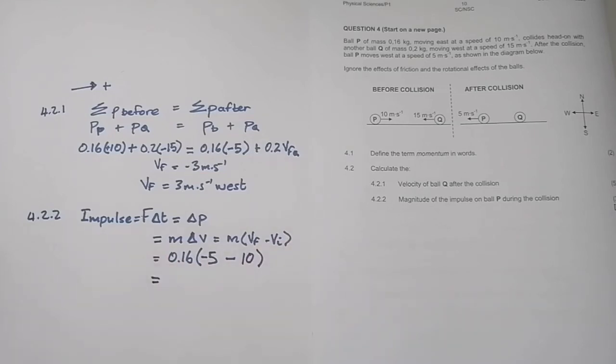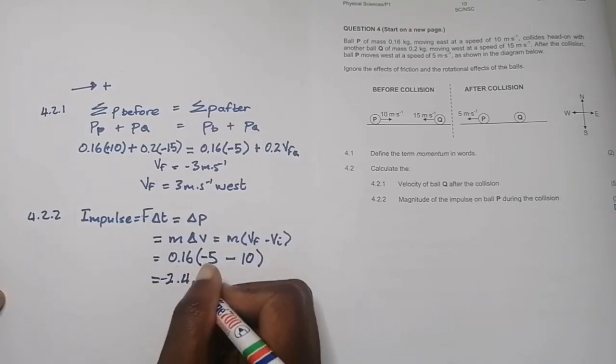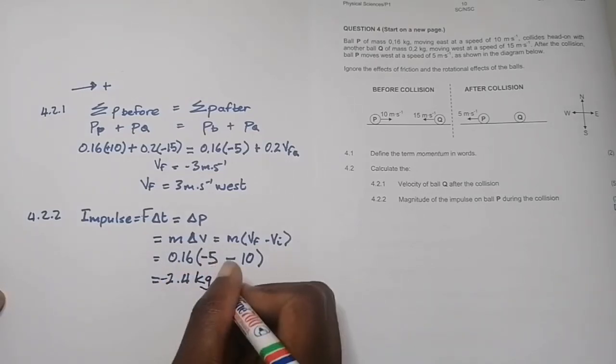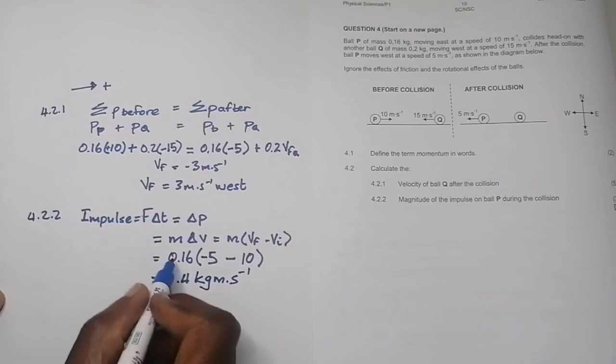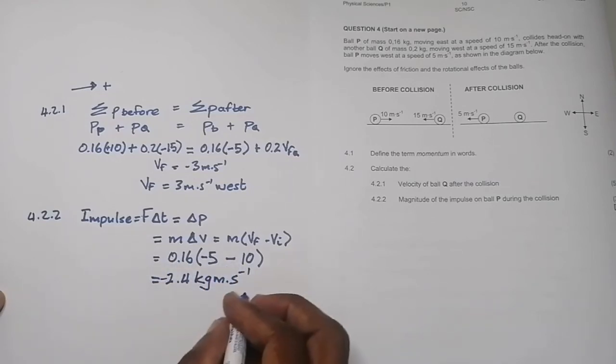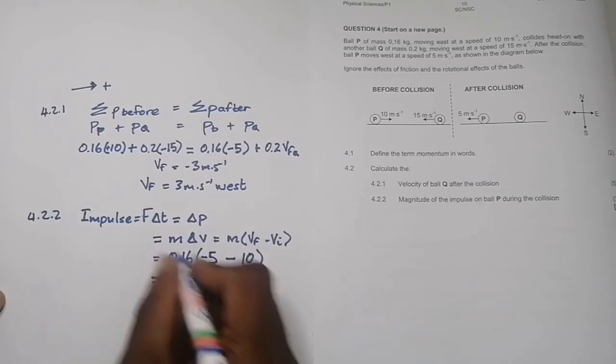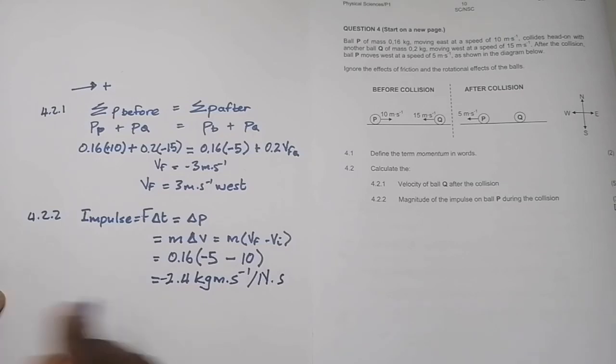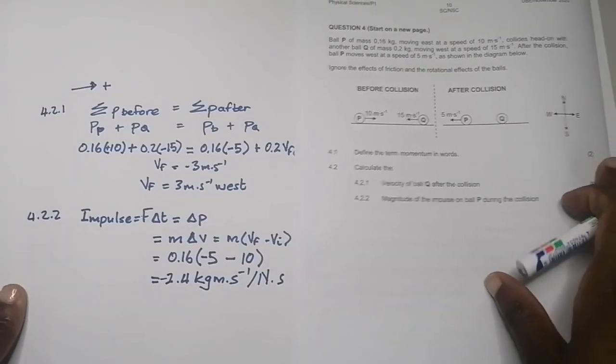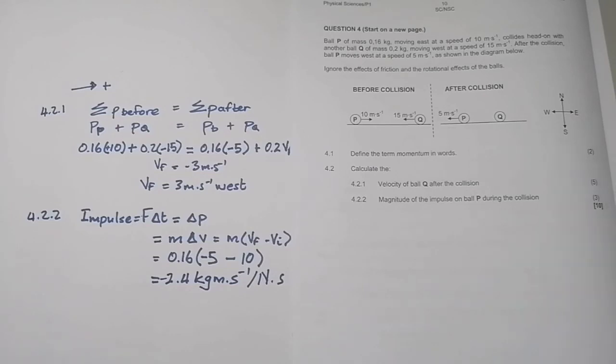The final answer is negative 2.4 kilogram meters per second. Keep in mind that's mass times velocity, so that's kilogram meters per second. Alternatively, you can also express that SI unit as Newton seconds. That is the final answer. If you got that, you would have scored yourself a good whopping 10 marks.